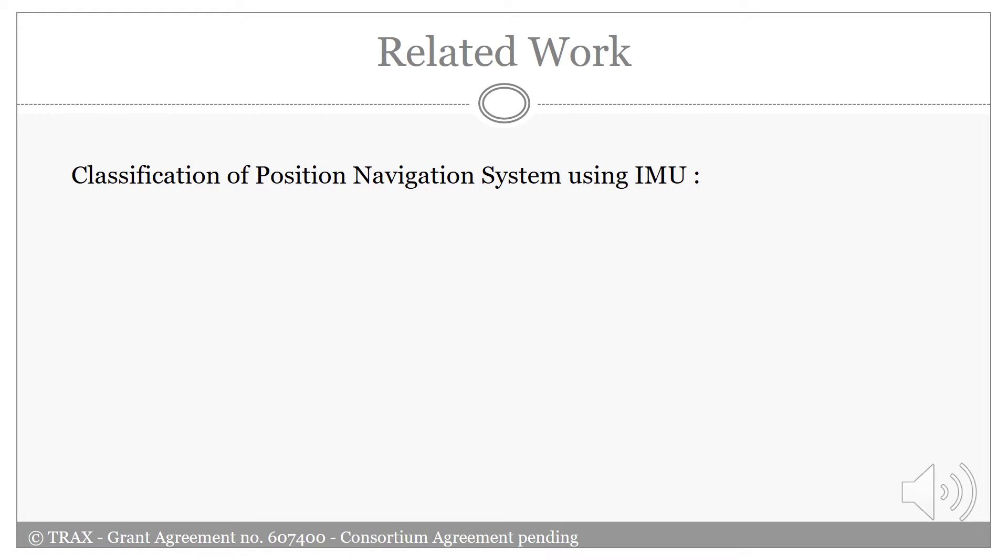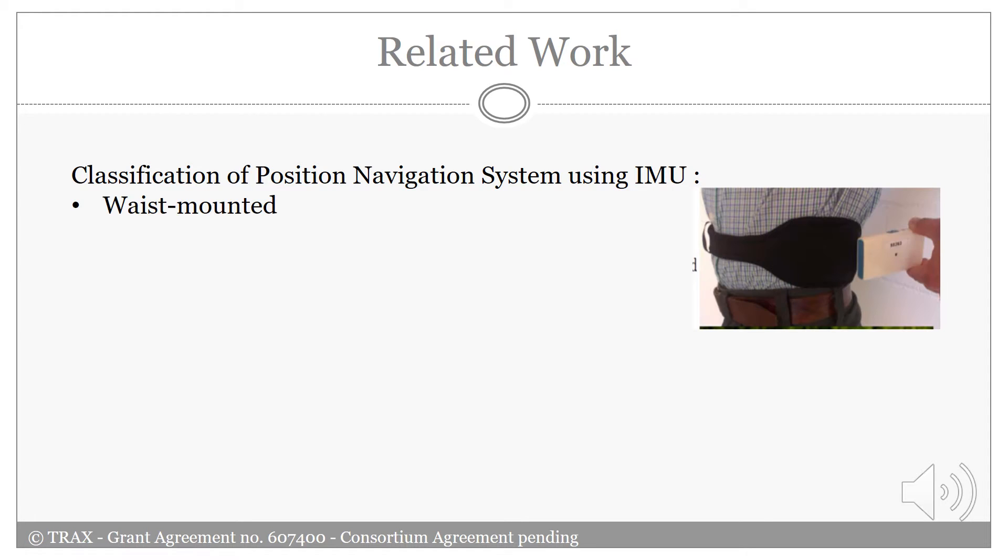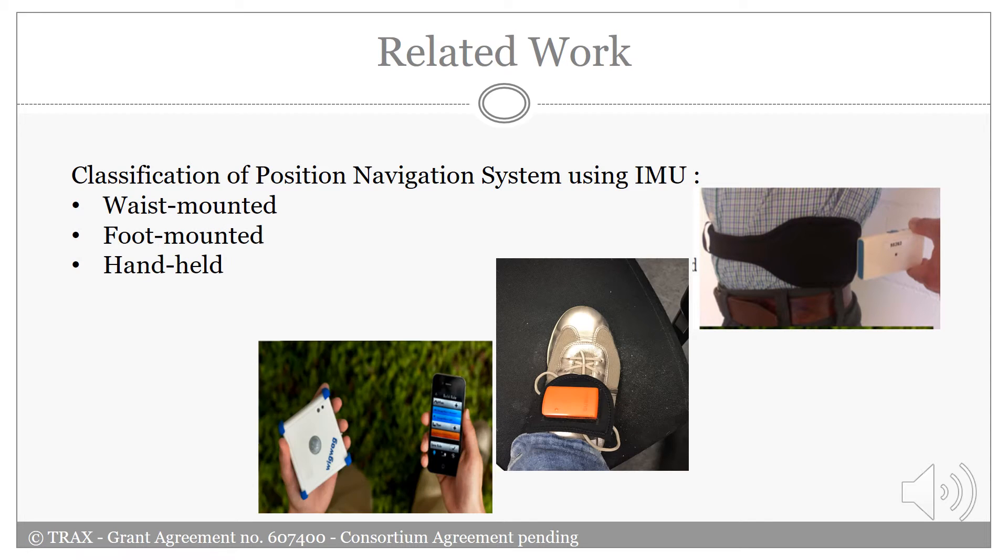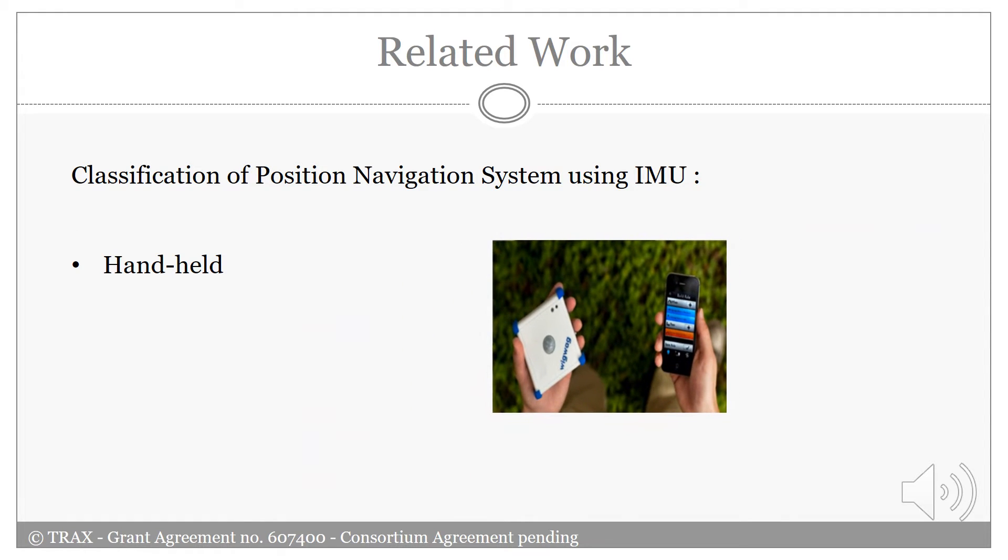Position navigation systems using IMU can be generally classified based on the location of the installed sensor: waist-mounted, foot-mounted, or handheld devices. Since body-fixed systems require extra devices to be produced and mounted, handheld devices gain more interest thanks to the rapid development of smartphones. In this work, we are considering mobile devices embedded with IMU sensors.